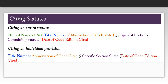You can also cite an individual provision within a statute. For this, you just need the title number, the abbreviation of the code cited, the section symbol, the specific section cited, and the date of the code edition cited.